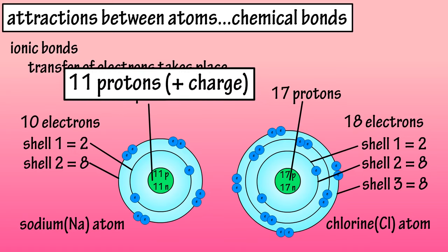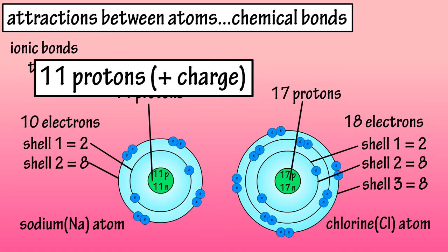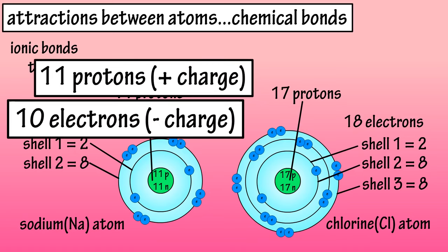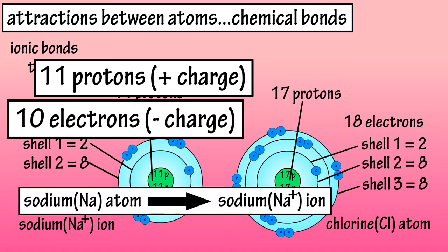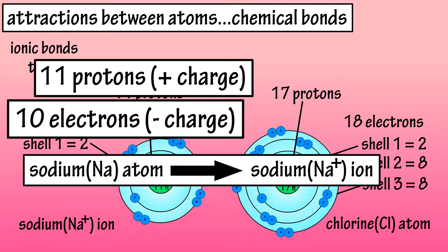Since the sodium atom gave up an electron, it has 11 protons, which are positively charged, and 10 electrons, which are negatively charged. This results in the formation of a sodium ion with a positive charge.